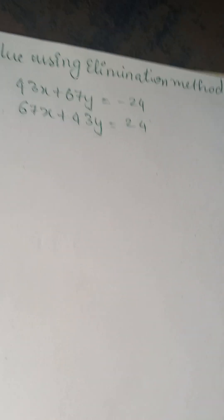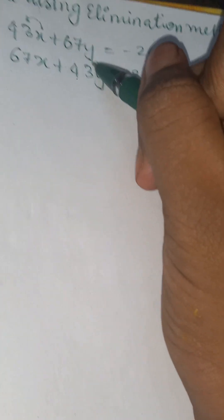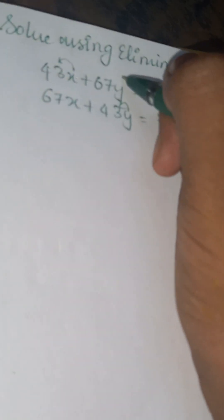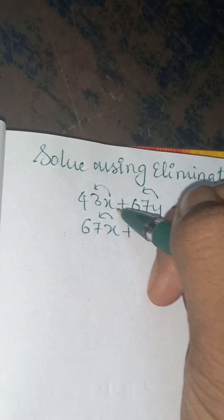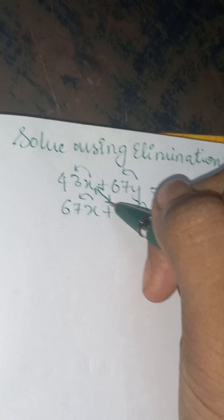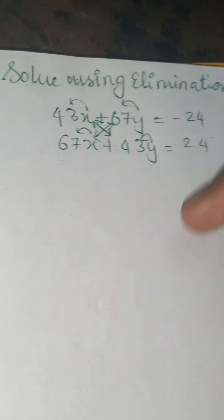The coefficient of x here is 43 and the coefficient of y here is 43. In a similar manner, the coefficient of y is 67 and the coefficient of x is 67. So the coefficients of x and y are the same, and the coefficients of these both things are the same, so they are interchanged.